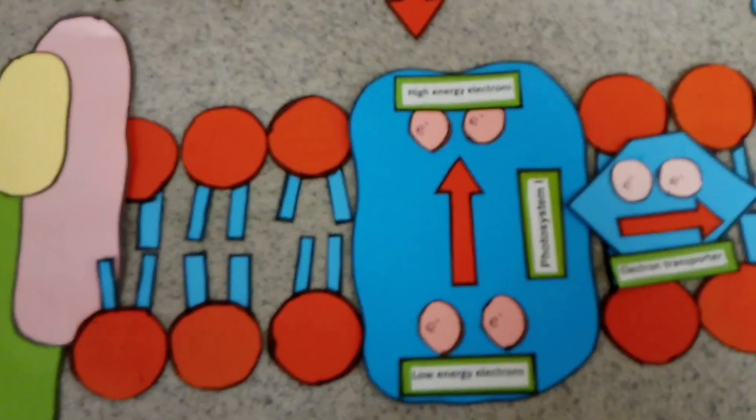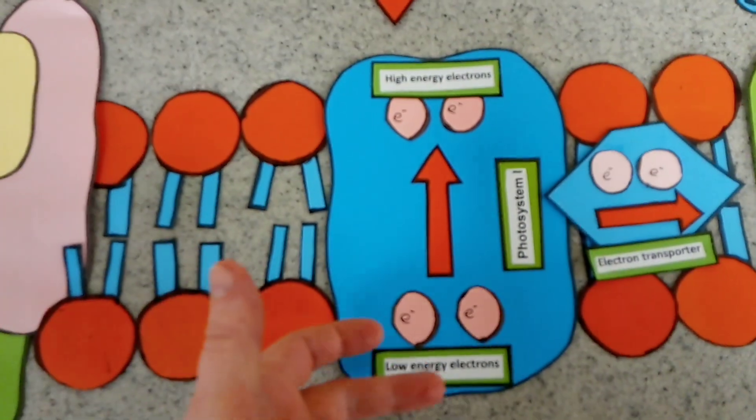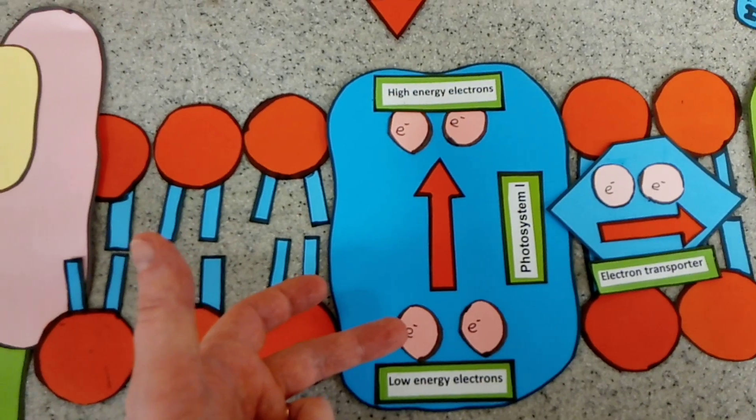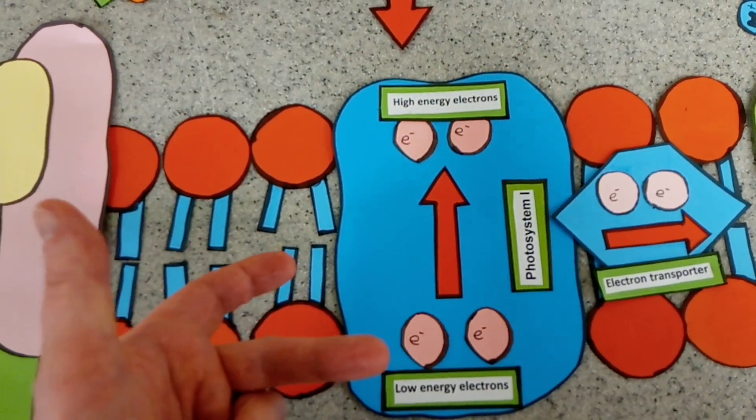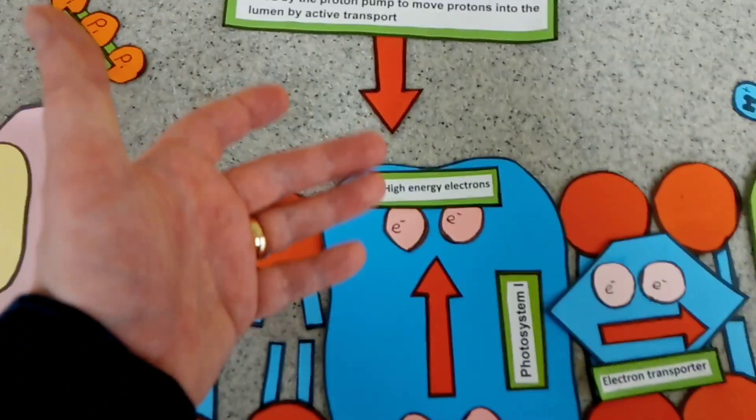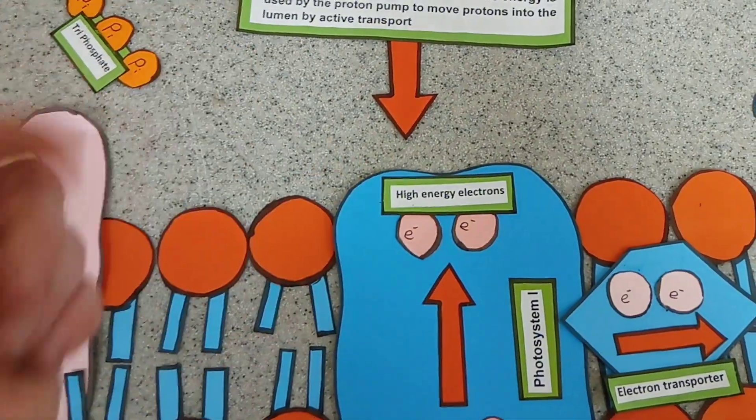In the cyclic form, the same happens again. So two electrons move into photosystem 1 and are moved from an area of low energy up to an area of higher energy using light energy.